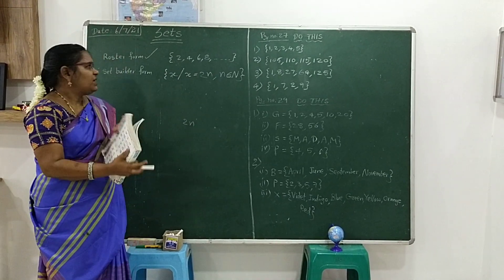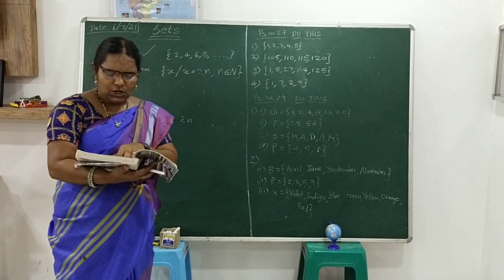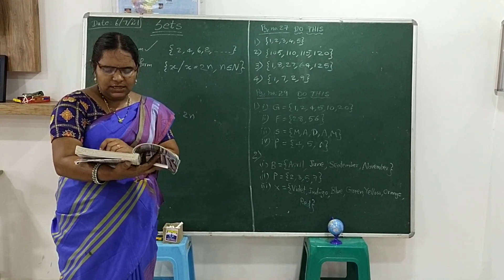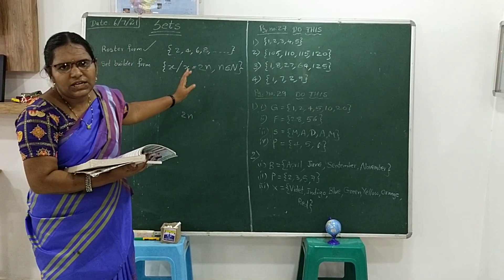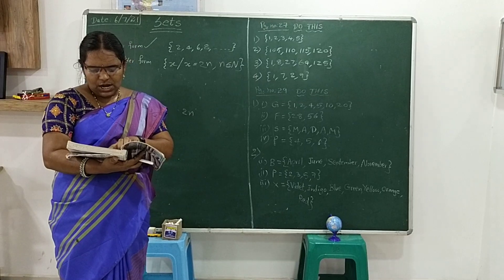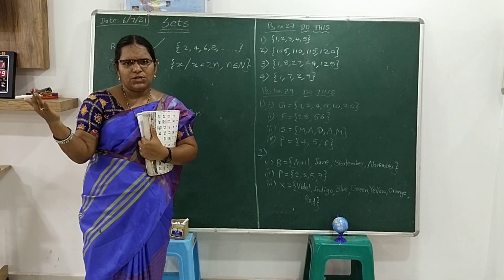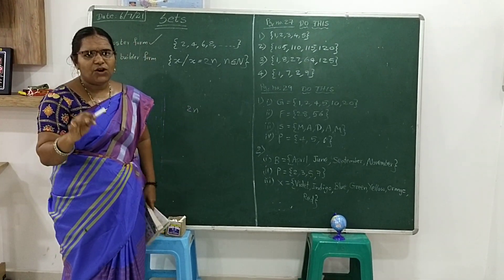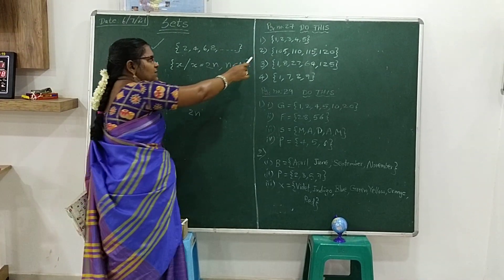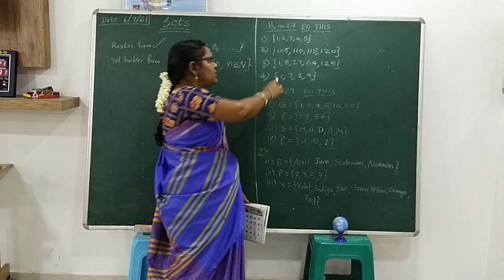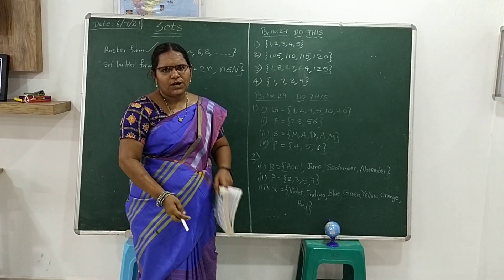Based on these forms, we have questions on page number 27. First one: set of first 5 positive integers. Integers means negative numbers, 0, and positive numbers. They ask for positive integers, which start with 1. First 5 — therefore the answer is 1, 2, 3, 4, 5. Positive integers start with 1, and first 5 means up to 5.